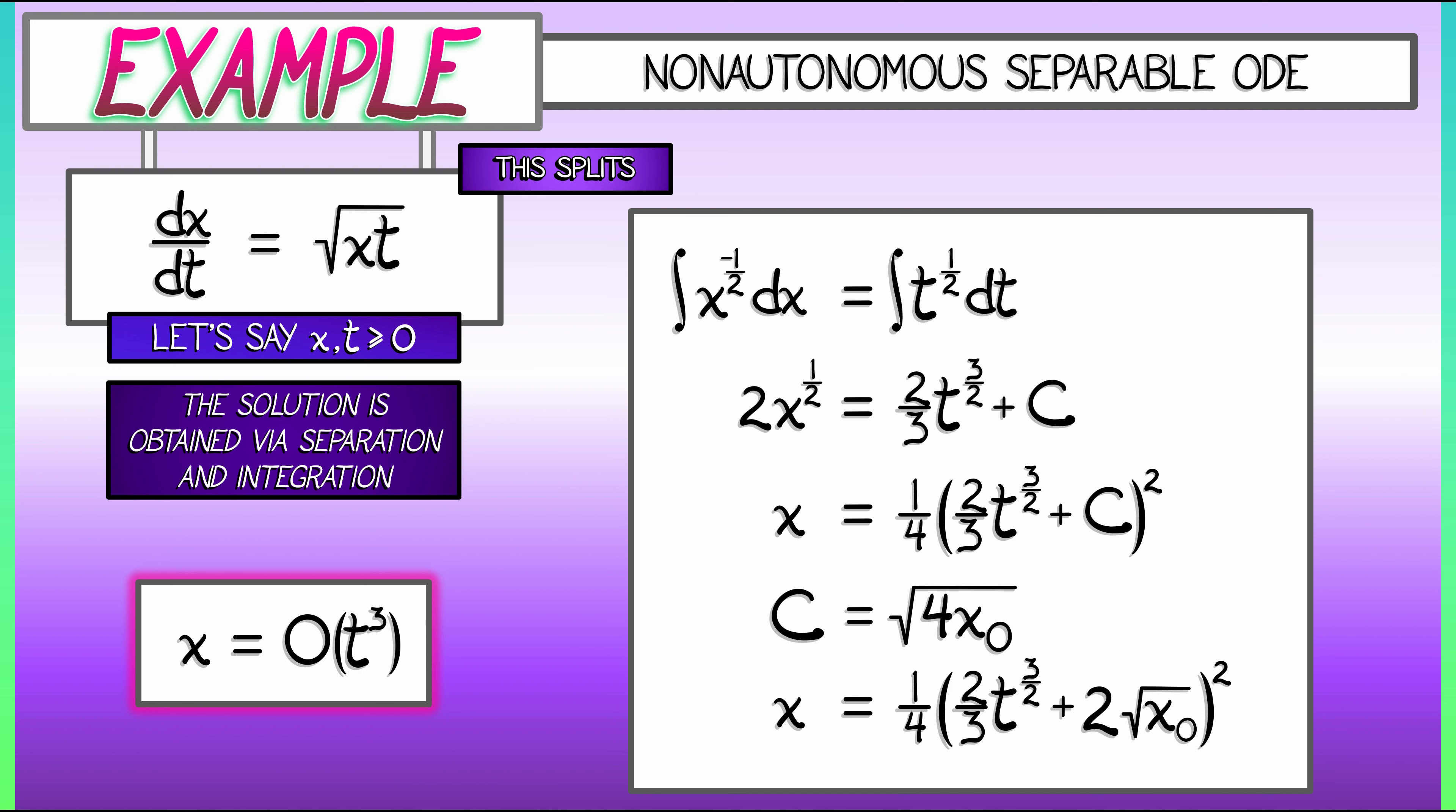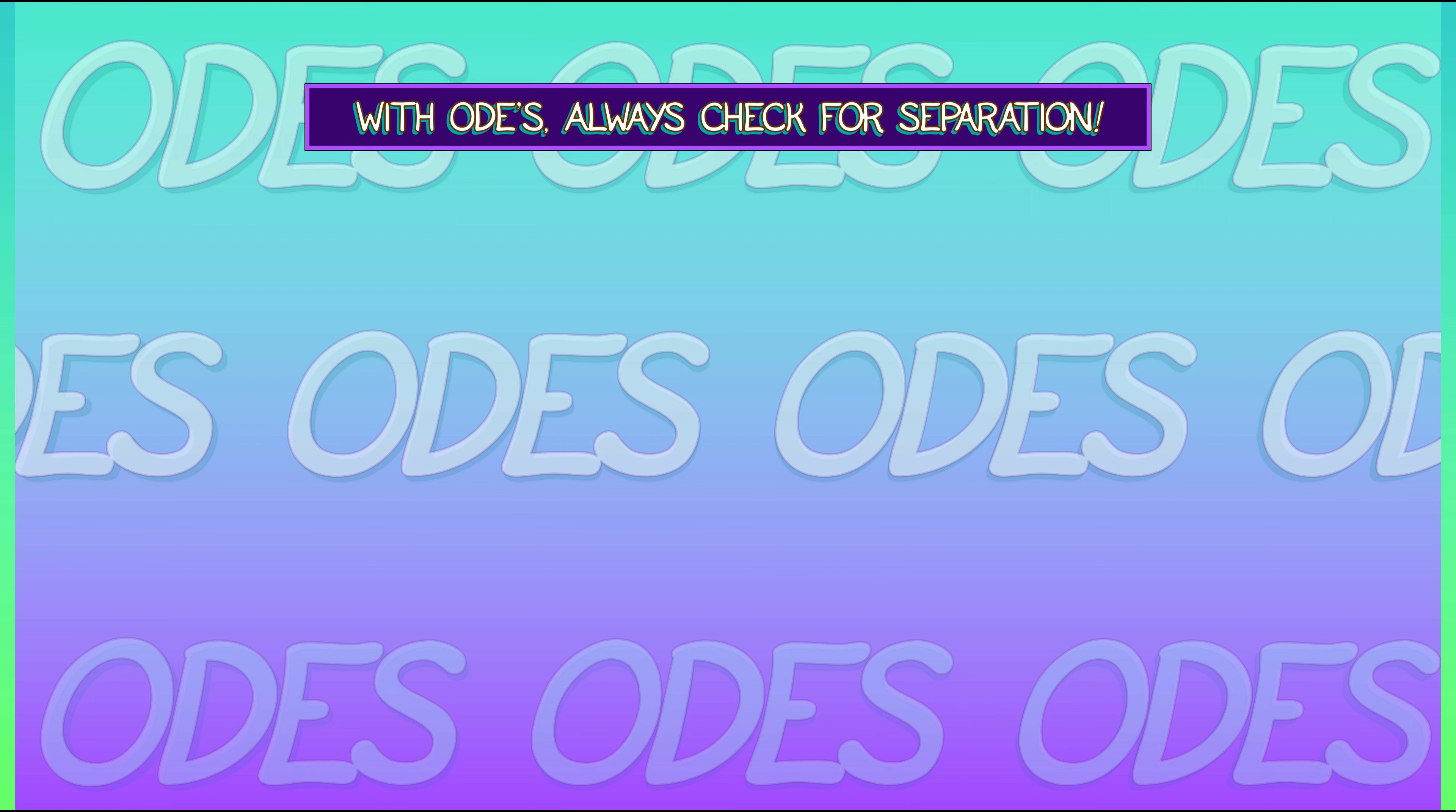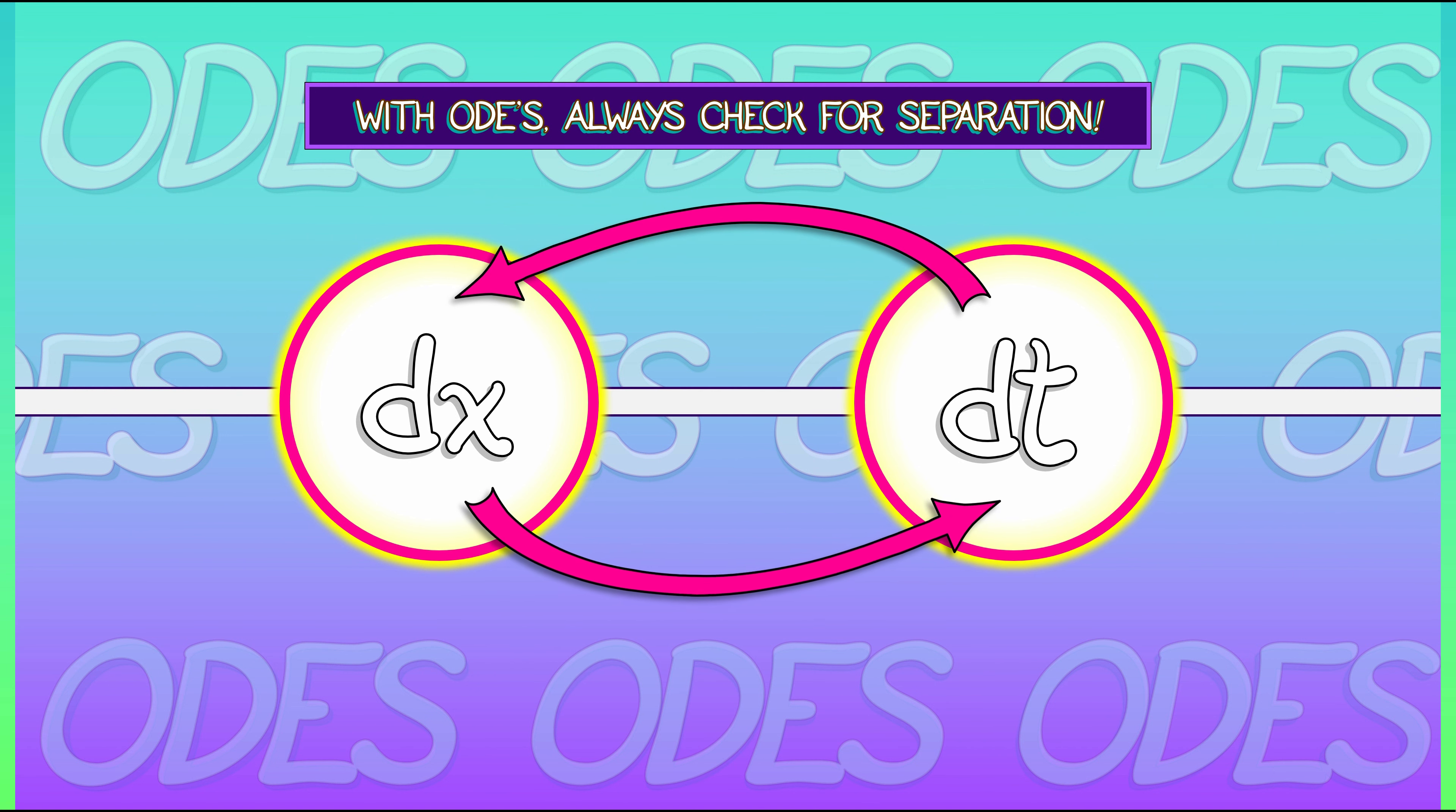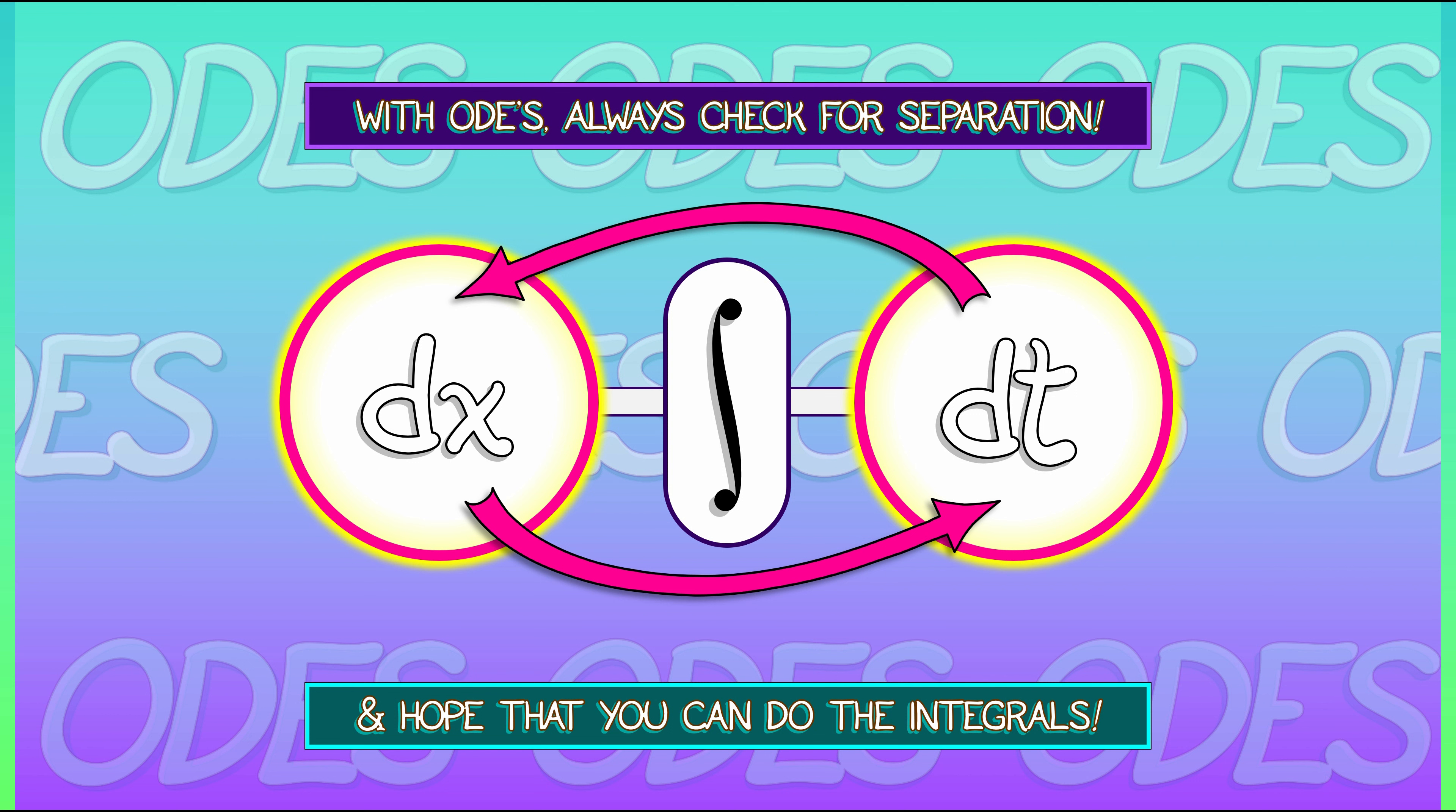I could imagine redoing this example with lots of different right-hand sides, so long as they split. When you're given a non-linear ordinary differential equation, you always want to look and see, can I separate it out? Can I put the dt terms over on the right, the dx terms over on the left, separate all the variables out, integrate both sides? If we can do that, and if we can integrate both sides, then hopefully the equation is solvable.